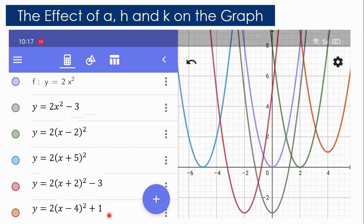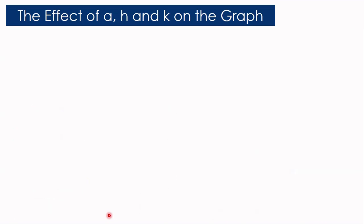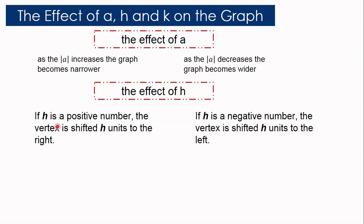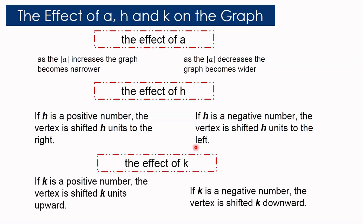I hope everything is clear. To summarize: the effect of A — as the absolute value of A increases, the graph becomes narrower; as it decreases, the graph becomes wider. For H — if H is positive, the vertex shifts H units to the right; if negative, it shifts H units to the left. For K — if K is positive, the vertex shifts K units upward; if negative, it shifts K units downward. That's it for today. Thank you for watching.